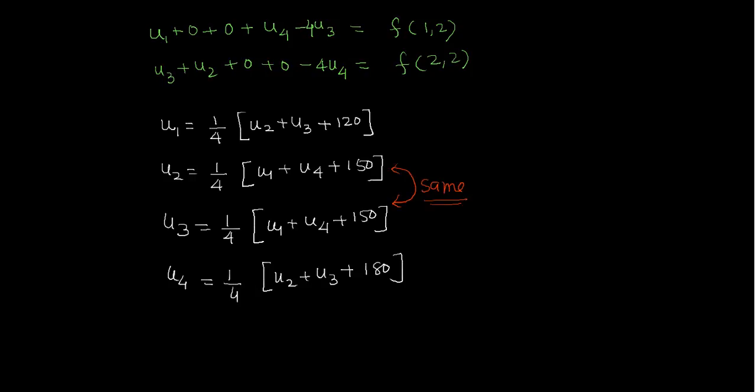So we only have to compute u1, u2, u3. Since they are the same, we can say that this implies u1 plus 2 - so these two are same, let's say u2 - so this will be 2 times u2, so it will be 1/2 times u2 plus 60.